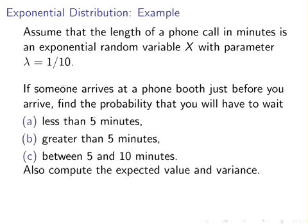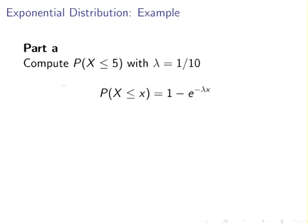Here is an example. Assume that the length of a phone call in minutes is an exponential random variable with a rate parameter of one divided by ten, i.e., lambda equals 0.1. If someone arrives at a phone booth just before you, find: the probability you wait less than five minutes; greater than ten minutes; and between five and ten minutes. Also compute the expected value and variance.